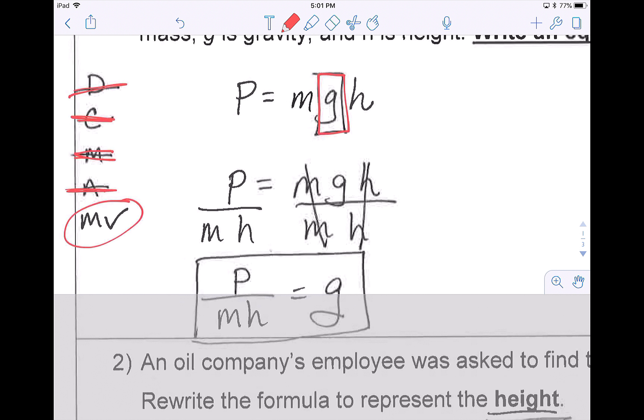So the only step we need to complete is multiplying or dividing. For this problem, I need to get rid of the m and I need to get rid of the h. m and g are being multiplied, so I divide by m, and g and h are being multiplied, so I divide by h. So on the right side, I've divided by m and by h. Well, whatever I do to one side, I have to do to the other.